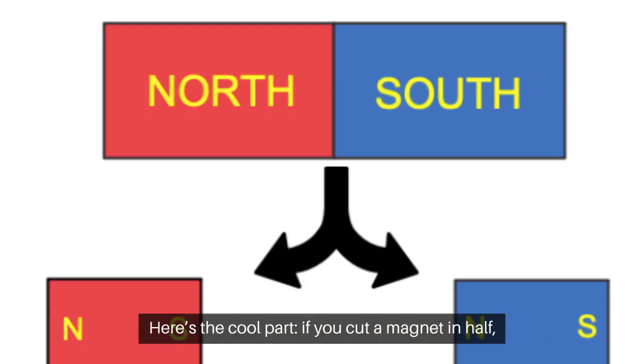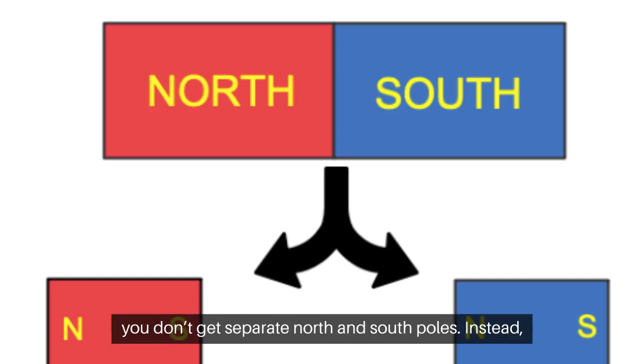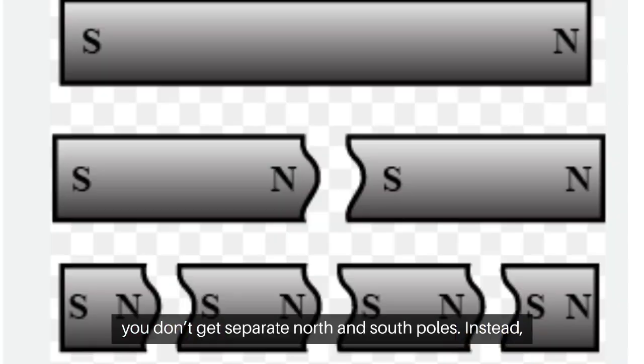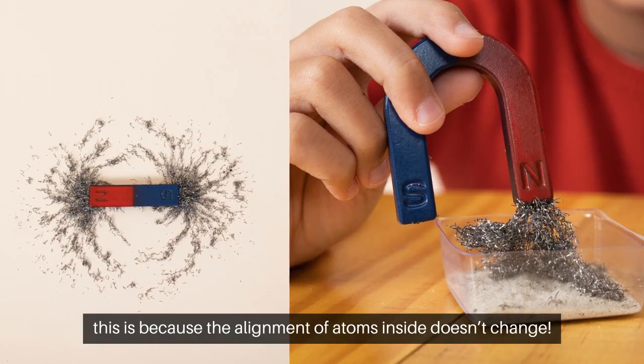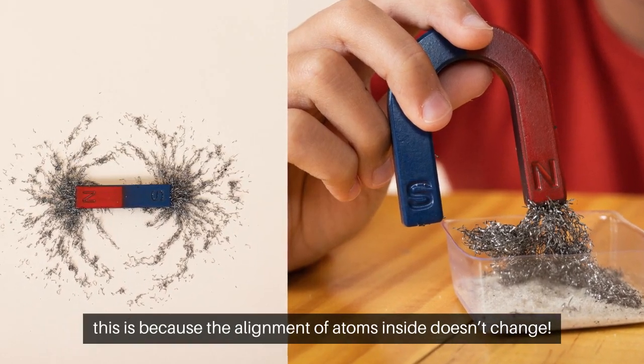Here's the cool part. If you cut a magnet in half, you don't get separate north and south poles. Instead, you get two new magnets, each with its own north and south pole. This is because the alignment of atoms inside doesn't change.